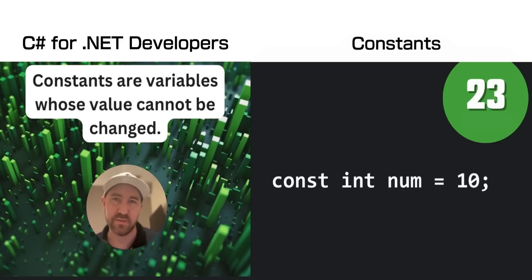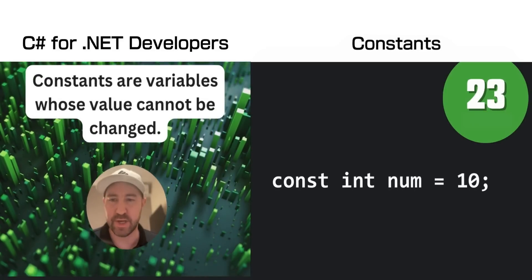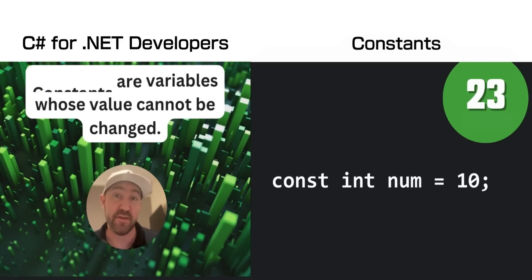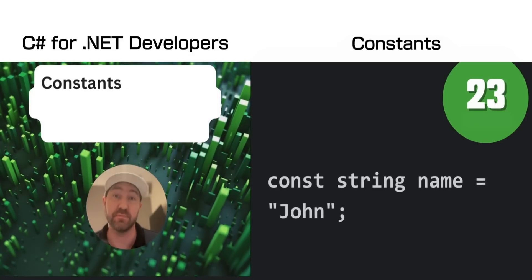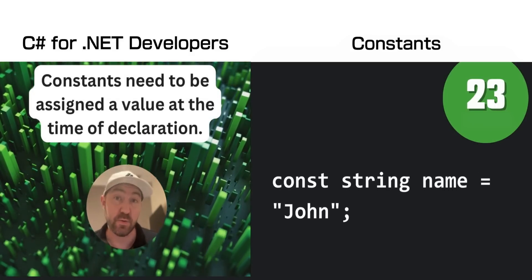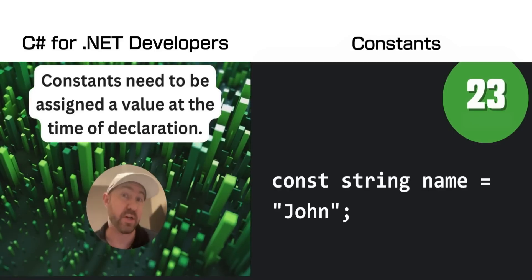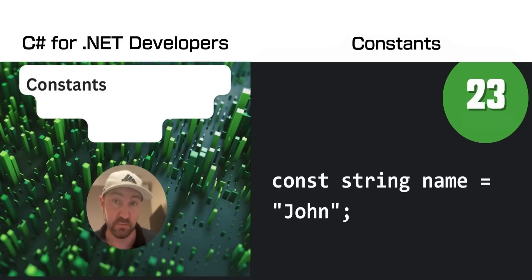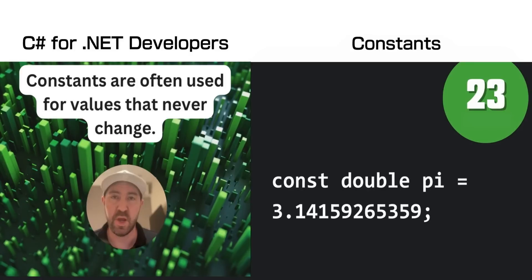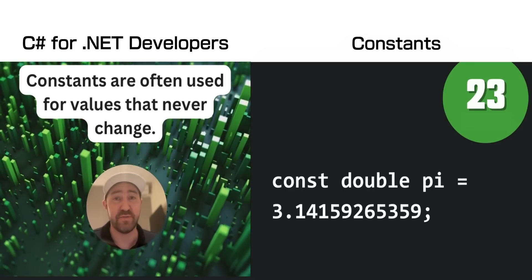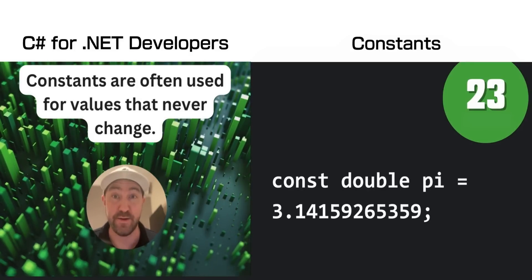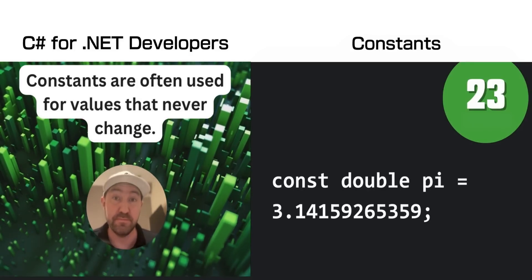Constants are the evil cousin of variables — you can imagine them as variables that cannot have their value changed. You have to assign them a value when you declare the constant. It can't be null. You would normally use them for values that never change, such as pi or an important number.